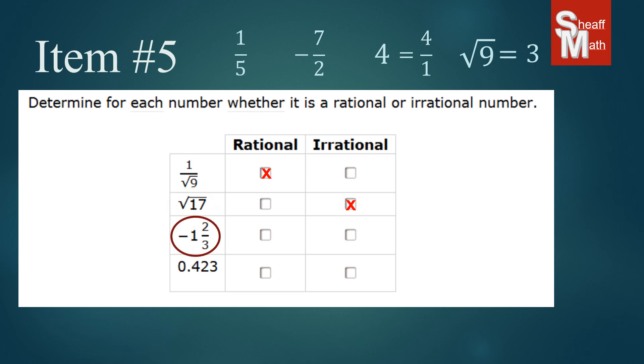On the third one, negative one and two thirds, this can be represented in an improper fraction as negative five over three. And so that is a perfectly good fraction. Therefore, it is rational.